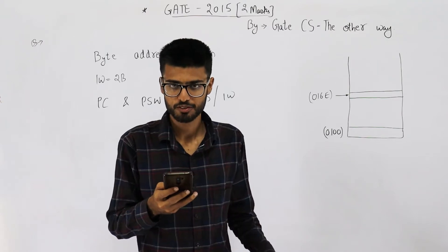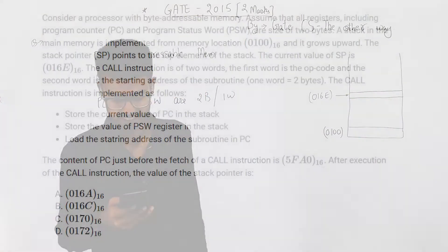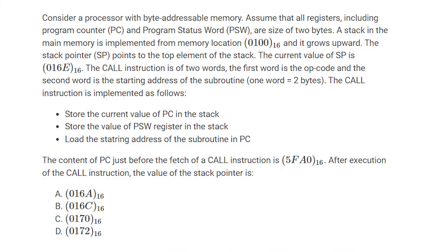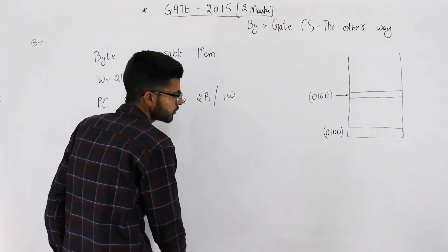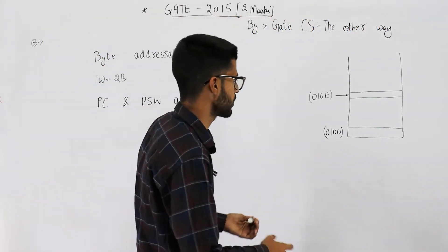Most of the time goes in reading this statement. Consider a processor with byte addressable memory. Assume all registers, including program counter and program status word, are of size 2 bytes. A stack in main memory is implemented from location 100 in hexadecimal and grows upwards.